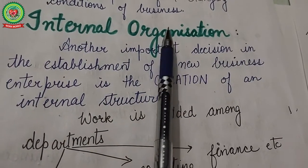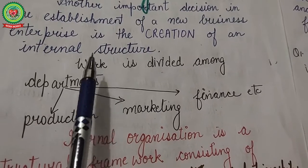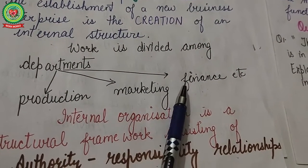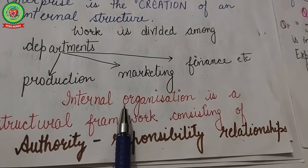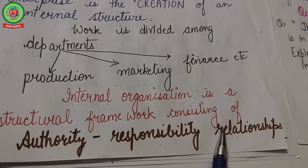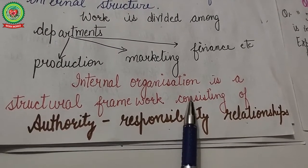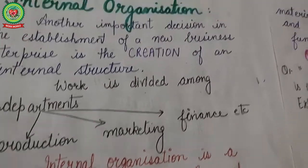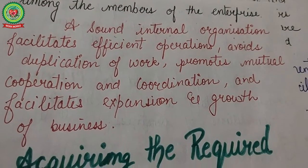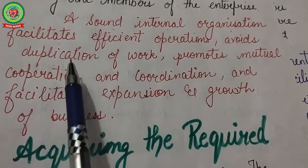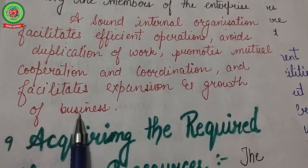The next step is internal organization. An important decision in establishing a new enterprise is creating an internal structure where work is divided among departments like production, marketing, and finance, and arrangements are made for coordination. An efficient network of authority and responsibility relationships needs to be created. Internal organization is a structural framework of authority and responsibility relationships among members of the enterprise. A sound internal organization facilitates efficient operations, avoids duplication of work, promotes mutual cooperation and coordination, and facilitates expansion and growth.